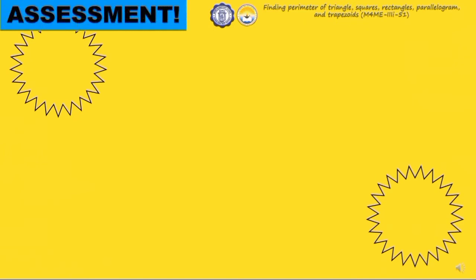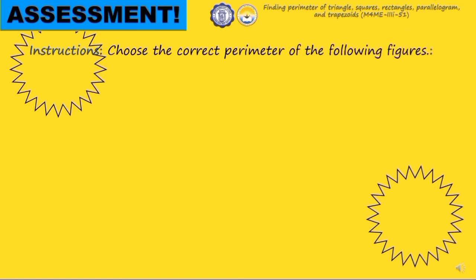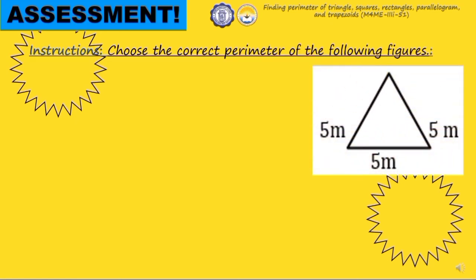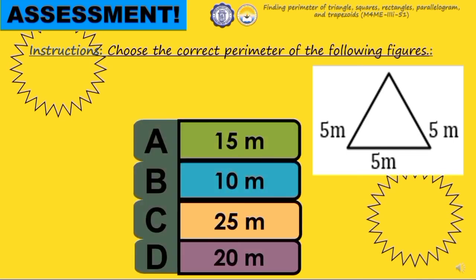For our assessment, choose the correct perimeter of the following figures that you can find in your modules. This is an equilateral triangle whose sides each measure 5 meters, 5 meters, and 5 meters. What is the perimeter of the equilateral triangle? A. 15 meters, B. 10 meters, C. 25 meters, D. 20 meters. The answer is letter A. 15 meters.